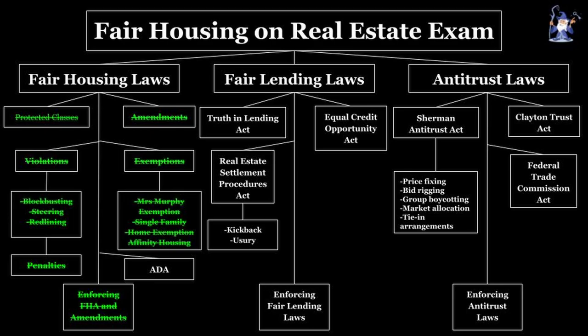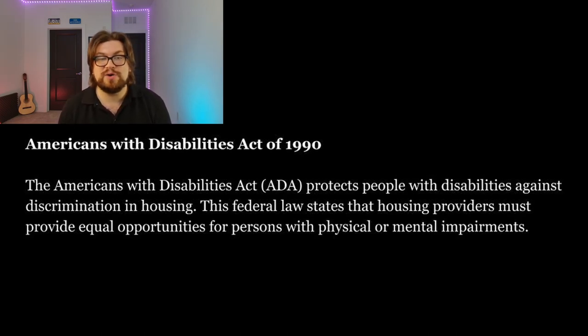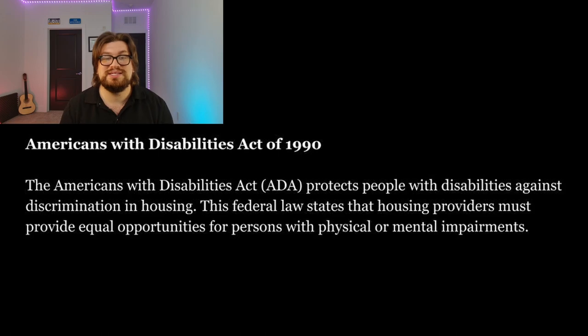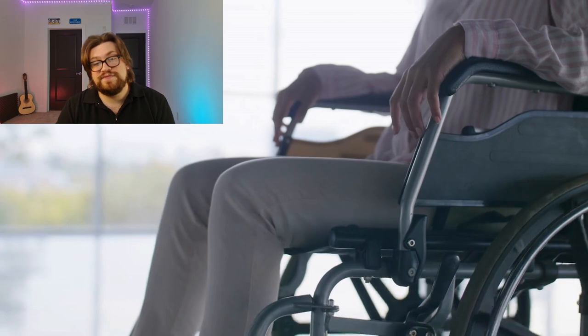There's one other fair housing law to cover before we move into fair lending. It's not part of the Fair Housing Act, but it's super important to know — the Americans with Disabilities Act of 1990. The ADA protects people with disabilities against discrimination in housing. This federal law states that housing providers must provide equal opportunities for persons with physical or mental impairments. Under this act, housing providers must make reasonable accommodations and modifications to ensure disabled people can live comfortably in their units. If such accommodations are not made, housing providers can face severe legal repercussions.